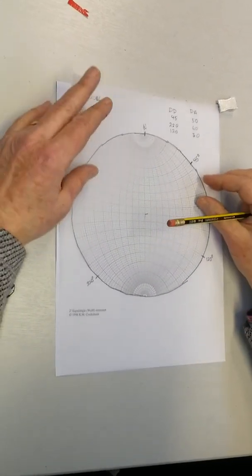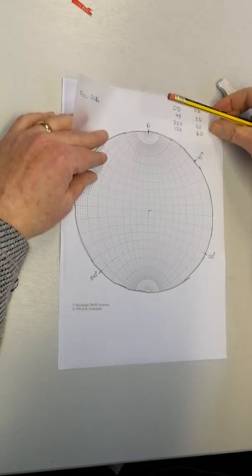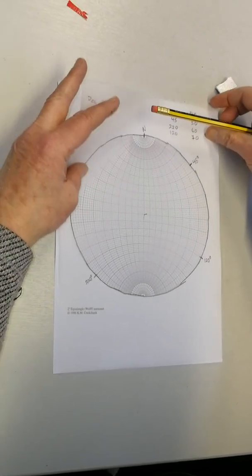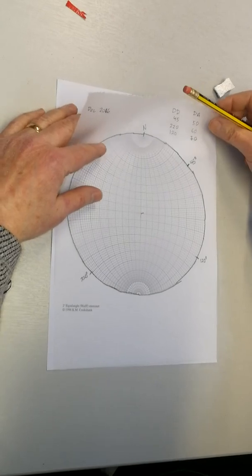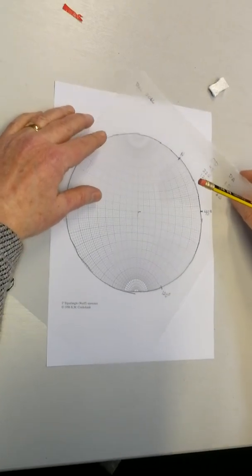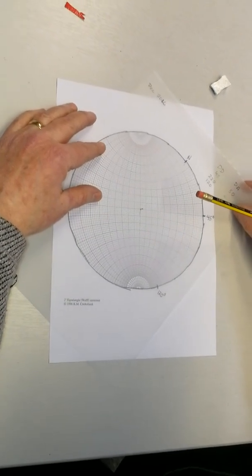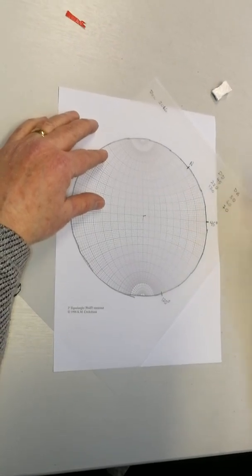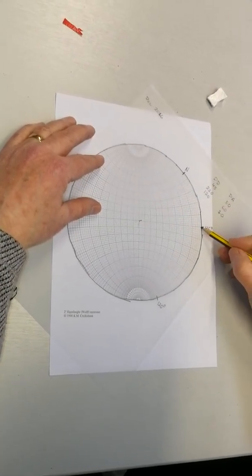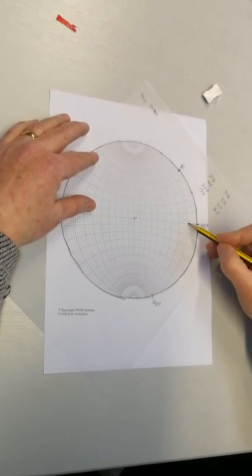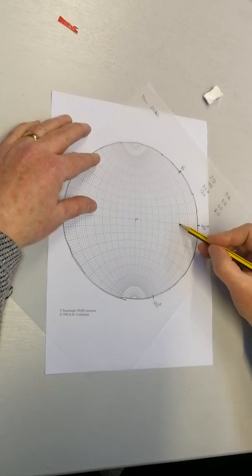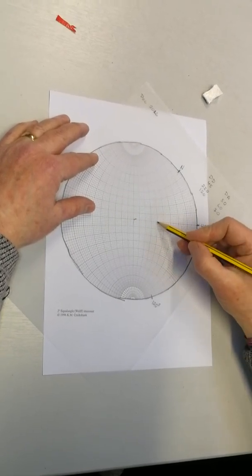So if the first one I want to draw is dip direction 45, dip amount 50, I rotate the 45 until we're over here on the east-west line. And now we're going to count in 50. Again, this is 10, 20, 30, 40, 50.